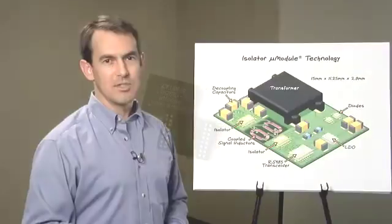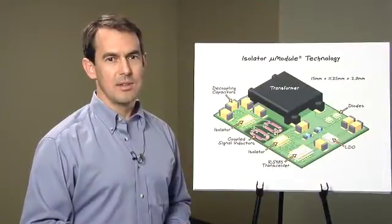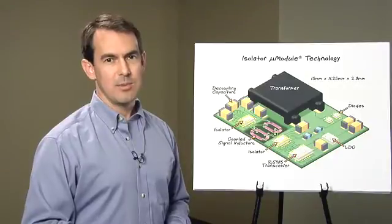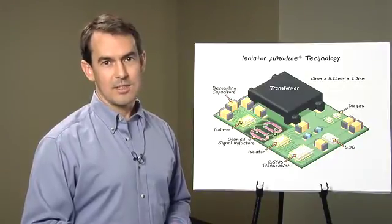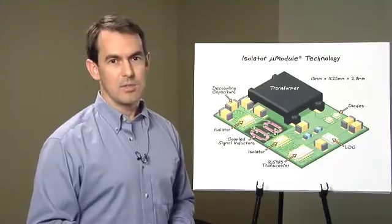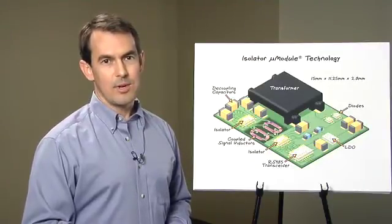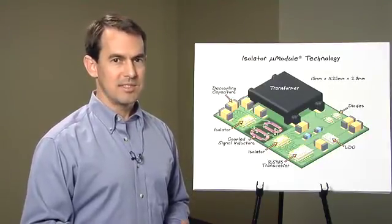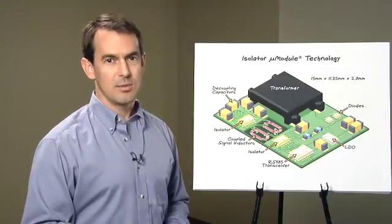In environments where high voltages are present, electrical isolation is commonly used to protect the human interface. Galvanic isolation, which means no conducting path, can stand off voltage. The LTM 2881 is rated to 2500 volts for 60 seconds, or up to 560 volts continuously.